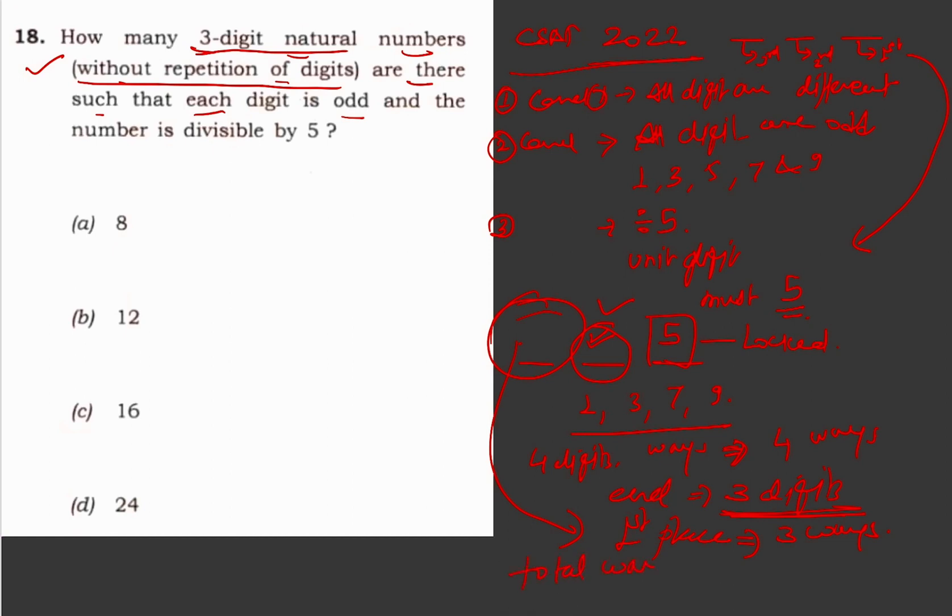Four into three, that means 12. So you get 12 natural numbers which satisfy the given conditions in the question. So the answer is 12. Thank you very much.